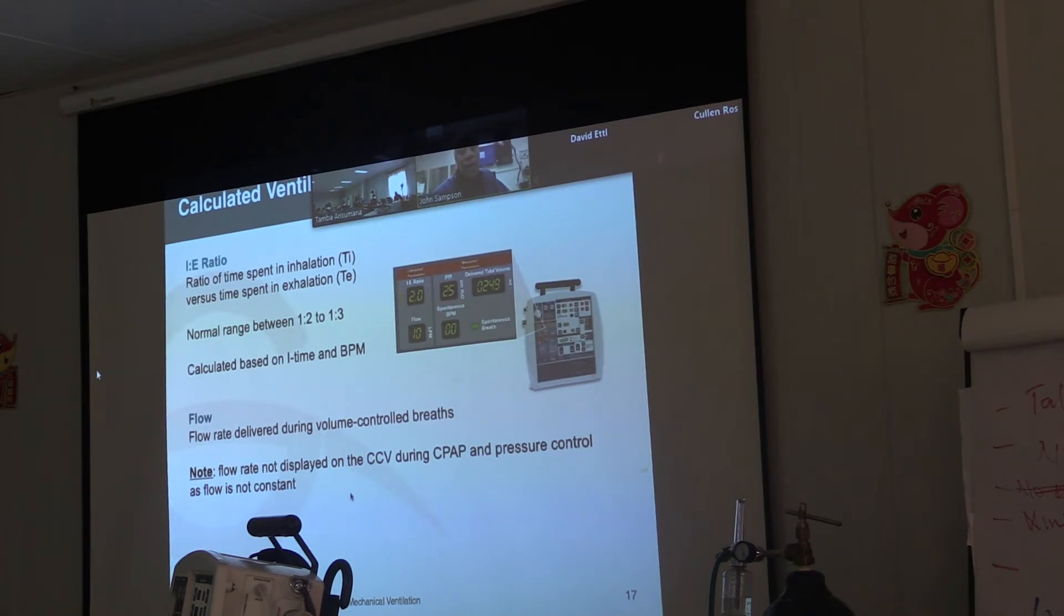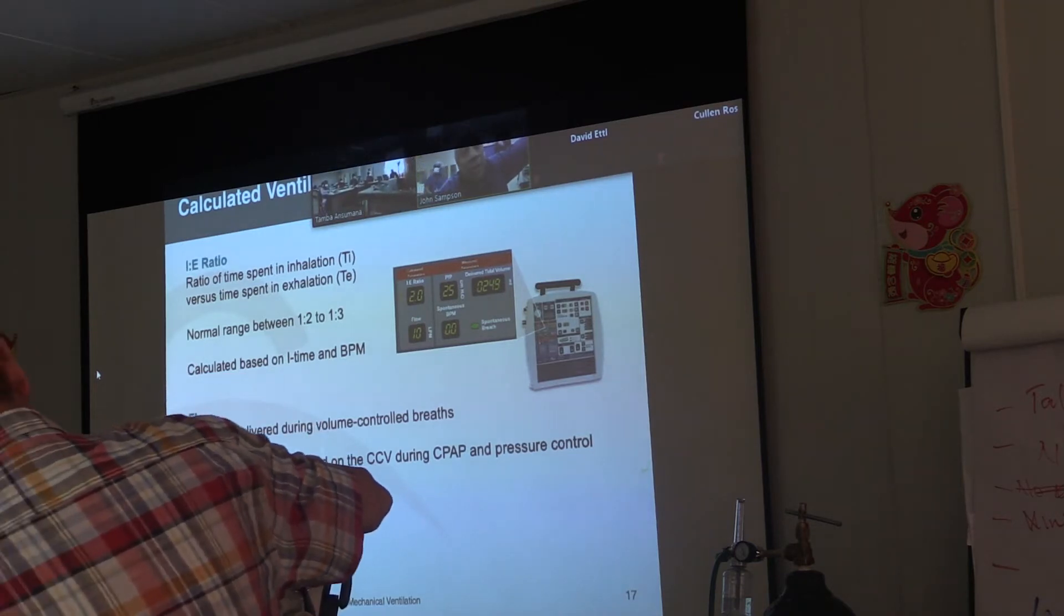The flow is the flow rate delivered during volume control graphs. If you look under the start switch, under the power button, is where they calculate. Those are things that are calculated. So the things in those two windows are things that are calculated.